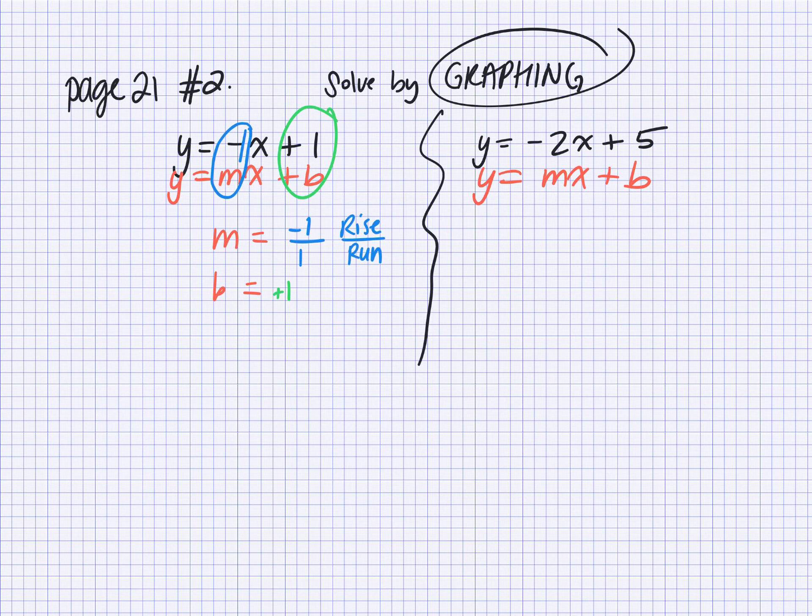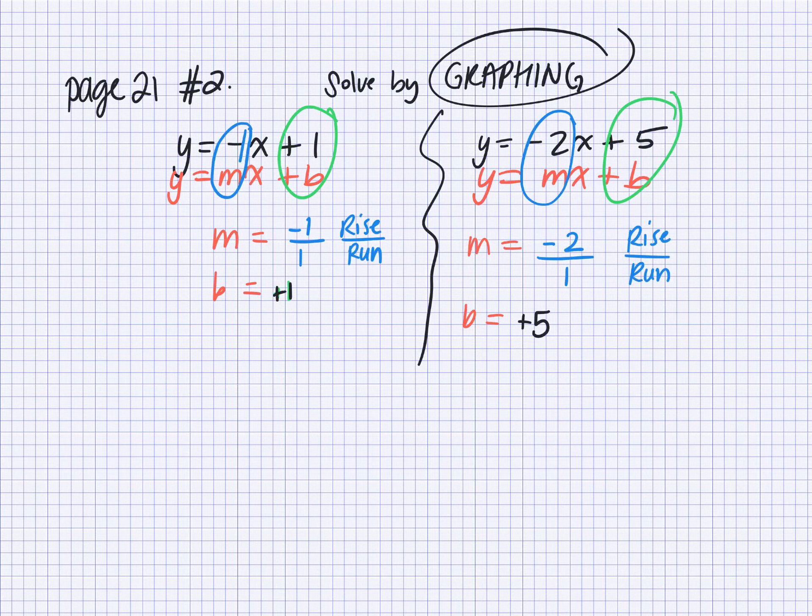Second equation, what is the slope? m equals negative 2 over 1. Always put the whole number over 1 so that you can count your rise and your run. And what is the y-intercept? What is b? Positive 1 for this one. And then the y-intercept for the second one is positive 5.